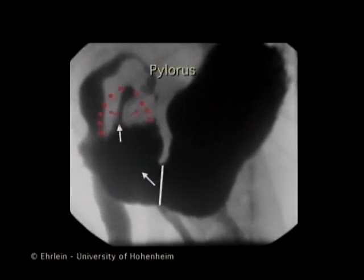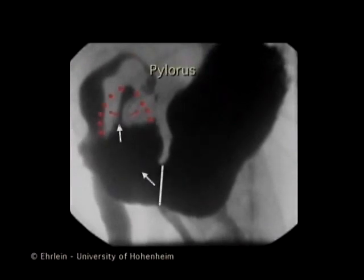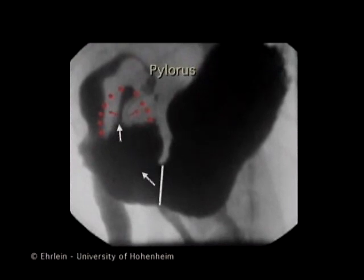When the peristaltic wave moves over the proximal antrum, chyme is propelled into the relaxing terminal antrum. This, therefore, is the propulsion phase.